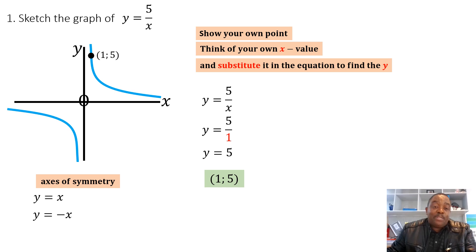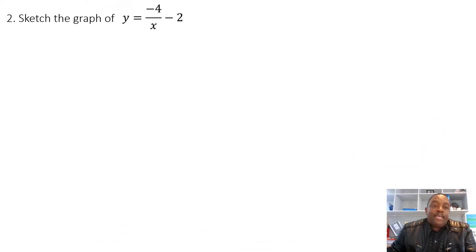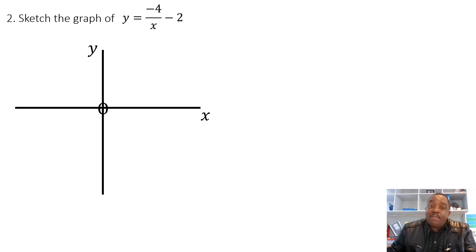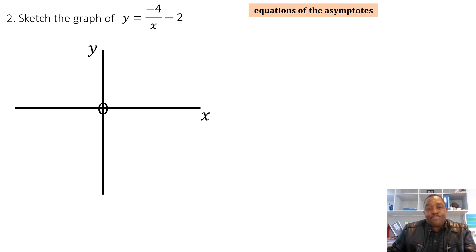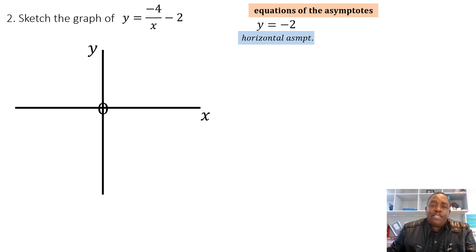Now let's look at the graph y = -4/x - 2. This graph has shifted — the value of q is -2, so the graph has shifted two units down. The value of 'a' is negative (-4), meaning the curves will appear in the second and fourth quadrants of the asymptotes. We need to show the curves, a point on the graph, and the horizontal asymptote.